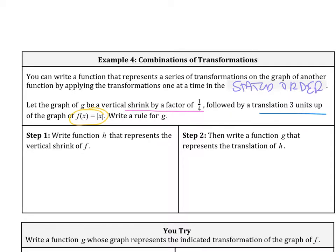Recalling from earlier, if you're doing a vertical shrink by a factor of 1/4, you're just going to multiply that 1/4 to that entire function. So it's going to be (1/4)|x|. That is our h(x). That's the first thing we did to transform it.